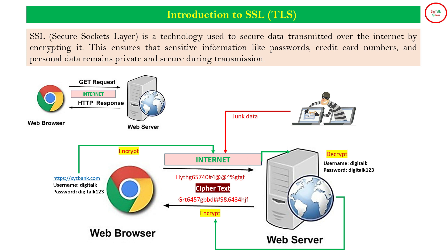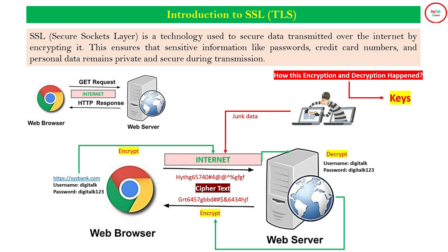The server will perform the response, and when the server sends the response back to the browser, this is again encrypted — this is called ciphertext. So when we say this kind of encryption and decryption is happening at the server side and at the client side — at the browser — how this encryption is happening? For this encryption, we use different kinds of keys. We will talk about all these keys — what are the different kinds of keys used for the encryption and decryption of data, and then later we will see how we can configure the different key stores and how the keys actually participate in this conversation between server and client.